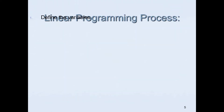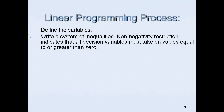Here are the processes for linear programming — the steps you will need to take. First, you'll need to define the variables, and then you'll need to write a system of inequalities. These inequalities will depend on the constraints that are given. You will also need to look at the non-negativity restriction, which indicates that all decision variables must take on values equal to or greater than zero.